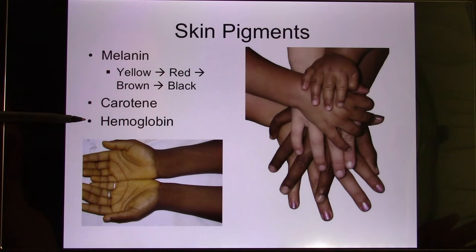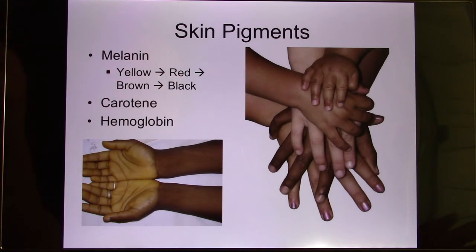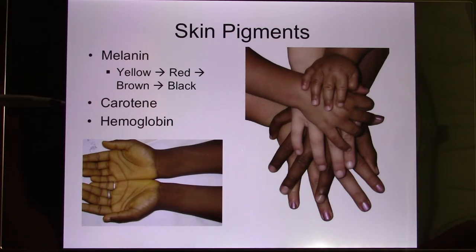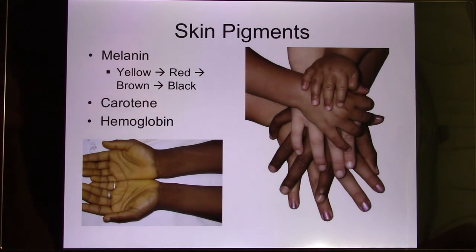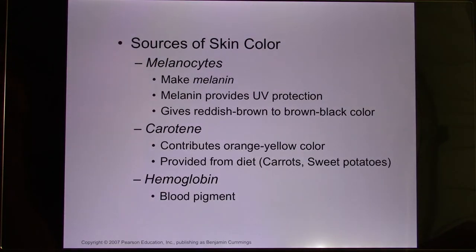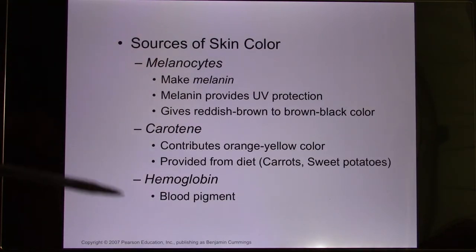The third pigment is hemoglobin. Hemoglobin is the pigment in your blood and its color is red. Sometimes after exercise you find some kids' cheeks turn pink — that's because of the hemoglobin. So those are the three pigments.